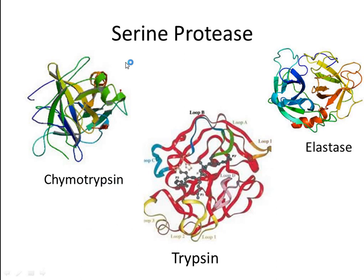The serine proteases are monomeric enzymes. They are called serine proteases because of the presence of a serine residue in their active site as an essential component. Among serine proteases, chymotrypsin, trypsin, and elastase — which are produced in inactive form by the mammalian pancreas — are the most important. These enzymes form a closely related group, although only about 40% of their primary structure is common to all three.